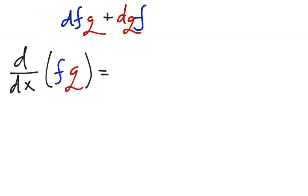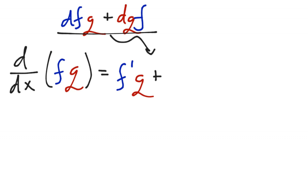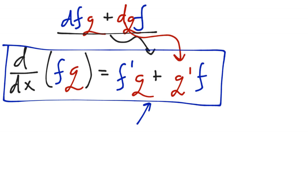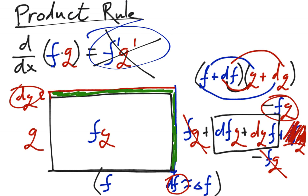Using this rectangle idea, the derivative of f times g, where f and g are both functions of x, is df·g plus dg·f. Converting back: df is f prime, dg is g prime, so the product rule says the derivative of f times g equals f prime·g plus g prime·f. That's how I remember it — just say 'f prime g plus g prime f.' It's a good rhymey mnemonic. This is the official product rule.